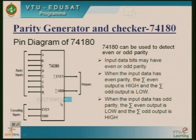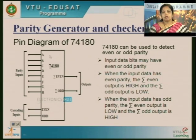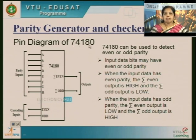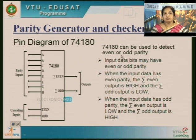Suppose we want to send more information, more than the available inputs. Then we can cascade, or use similar ICs — two or more ICs. We cascade the first IC with the second IC so that more bits can be sent. Basically, 74180 is called a parity generator as well as a checker. It can be used to detect even or odd parity.